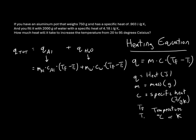Let's take stock of what we know. We're given the mass of aluminum and its specific heat. The mass of aluminum is 750 grams times the specific heat of 0.903, multiplied by (T final minus T initial). The temperatures are given: final temperature is 95 and initial is 20, so we put 95 minus 20 in the parentheses.